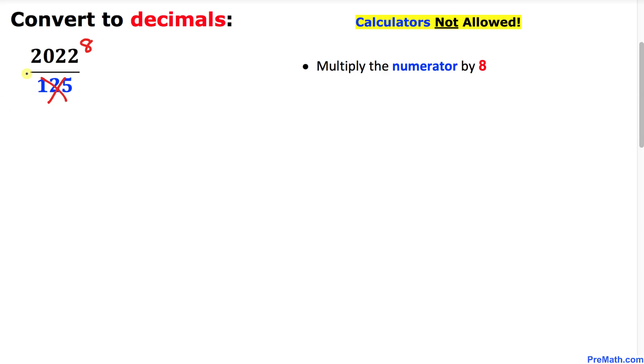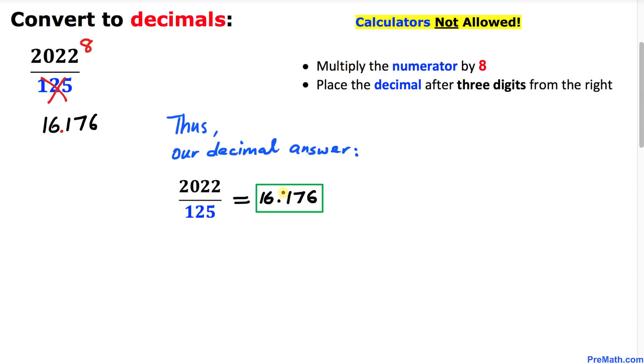If we multiply 2022 times 8, that gives us 16,176. Finally, we are going to place the decimal after three digits from the right, and that is the place. Thus our decimal answer turns out to be 16.176.